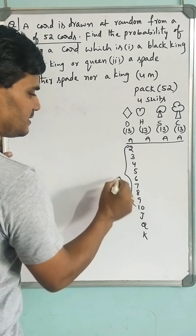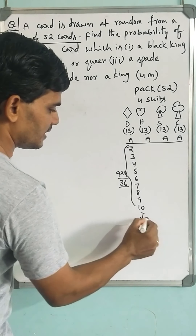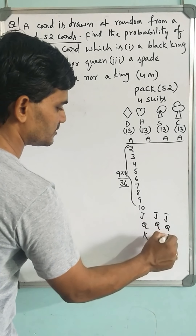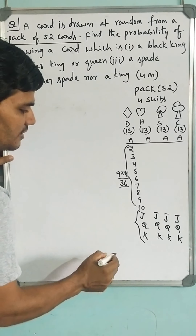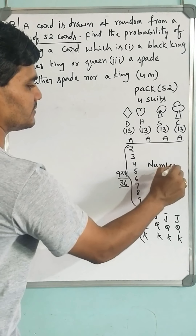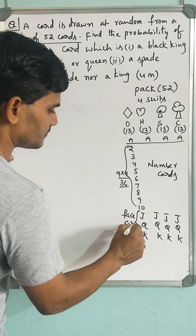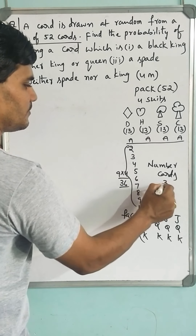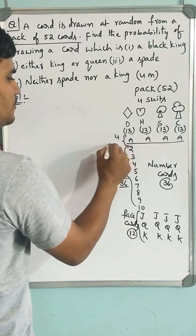So there are 4 aces, that is 9 into 4 = 36 number cards, and there will be a jack, queen, and king in all 4 suits. These are called face cards. Face cards are 12, number cards are 36, and there are 4 aces.